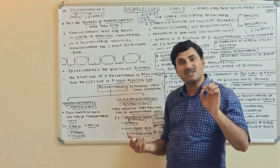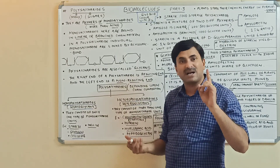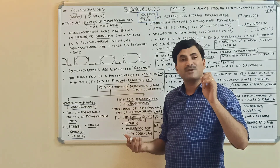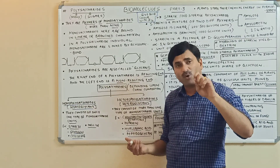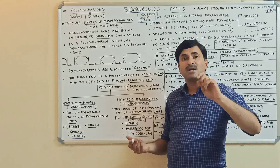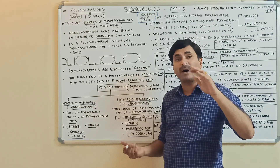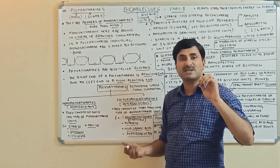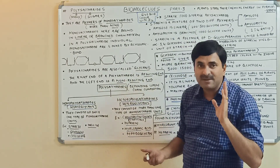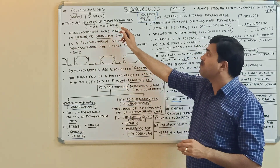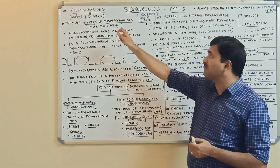The question arises: how many monosaccharide units combine together to form a polysaccharide? In the previous video we studied about oligosaccharides, which are made up of a minimum of two to a maximum of nine sugars. A polysaccharide will always have more than nine monosaccharide units, and sometimes it may go up to thousands.